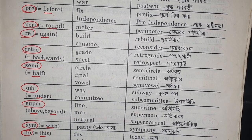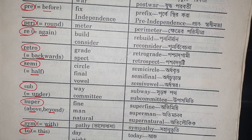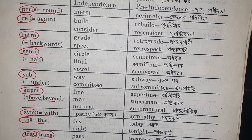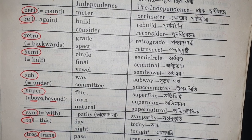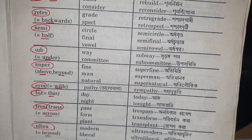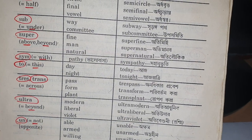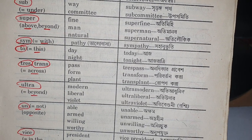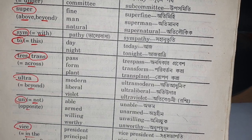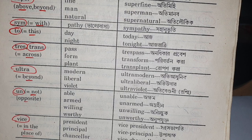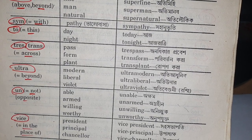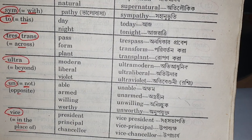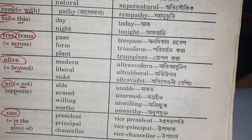Semi with the meaning of half — circle, semicircle; final, semifinal. Sub with the meaning of under — way, subway. Super with the meaning of above or beyond — fine, superfine; man, superman. Sym with the meaning of with — pathy, sympathy. To with the meaning of this — day, today; night, tonight. Trans or trace with the meaning of across — pass, trespass; form, transform. Ultra with the meaning of beyond — modern, ultra-modern. Un with the meaning of not, giving the opposite sense — able, unable; armed, unarmed. Vice with the meaning of in the place of — president, vice-president; principal, vice-principal; chancellor, vice-chancellor.